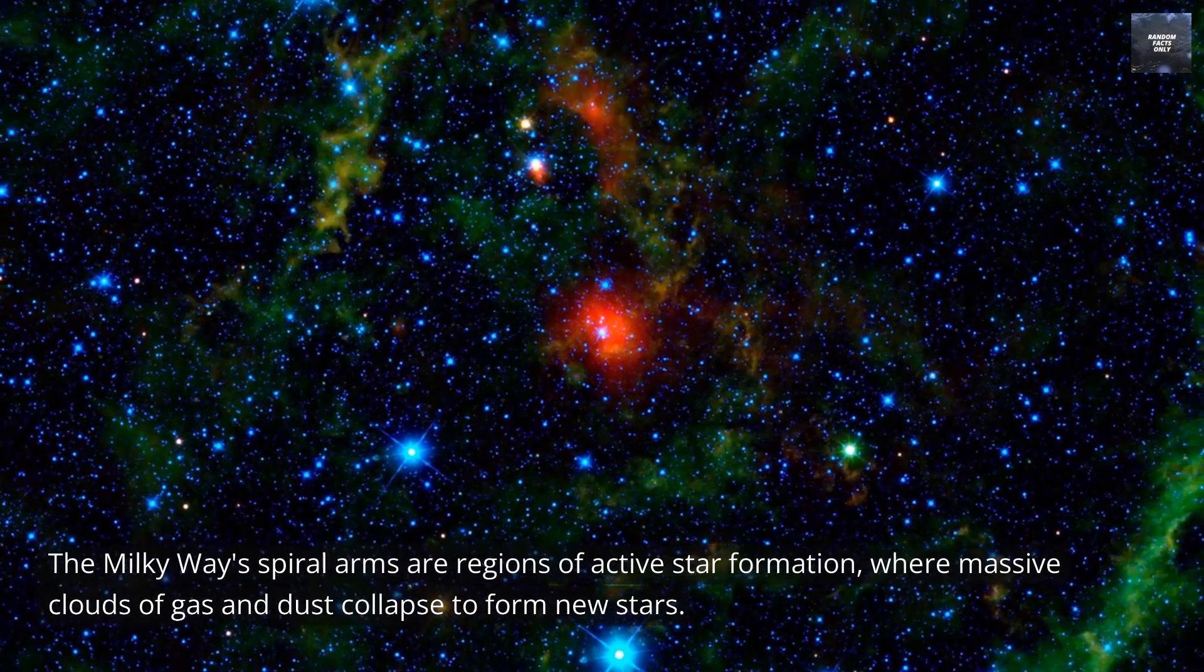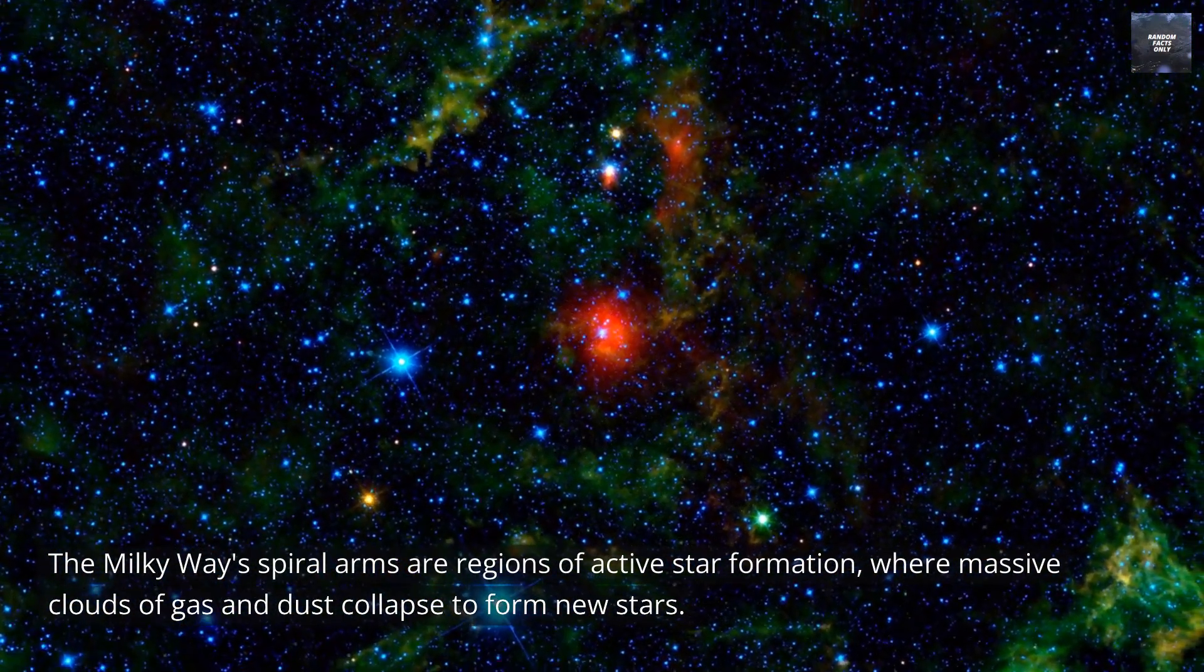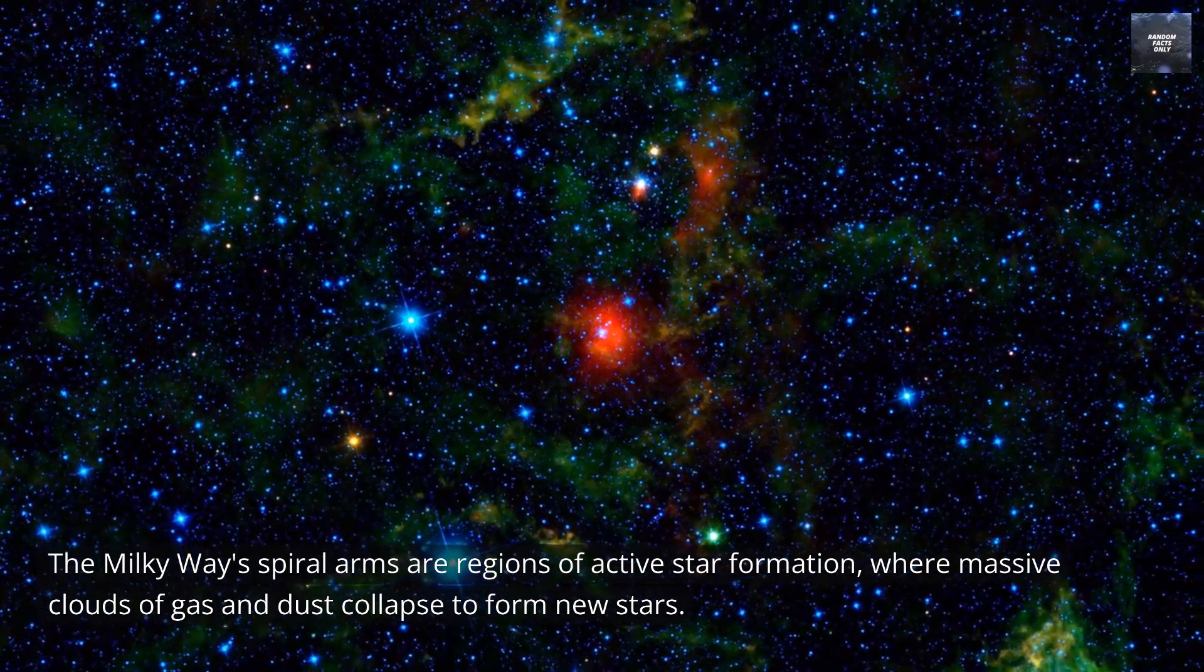The Milky Way's spiral arms are regions of active star formation, where massive clouds of gas and dust collapse to form new stars.